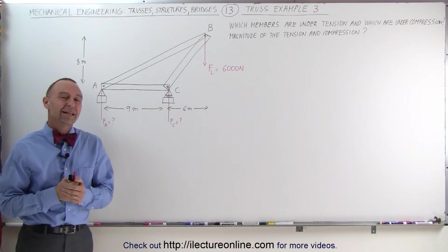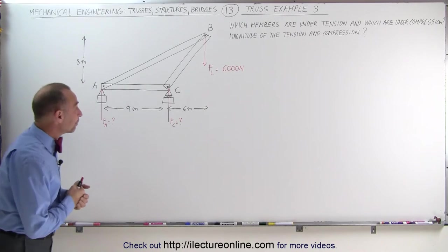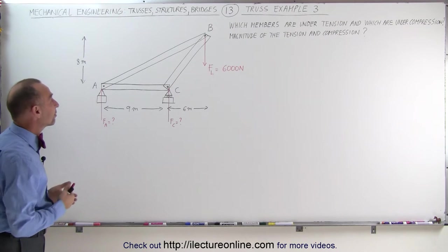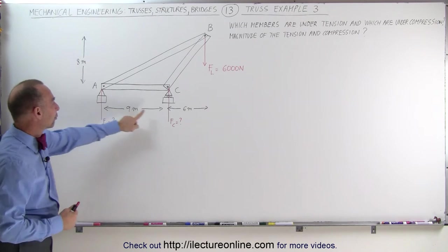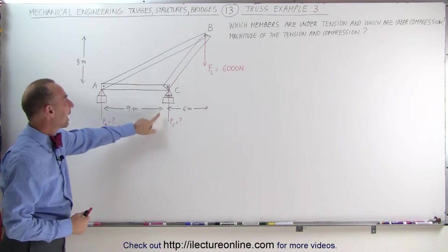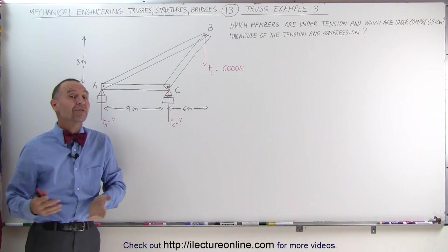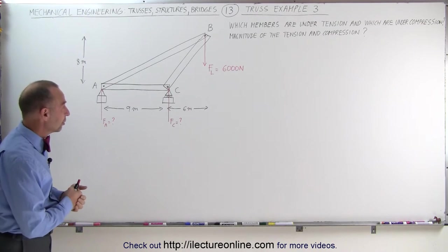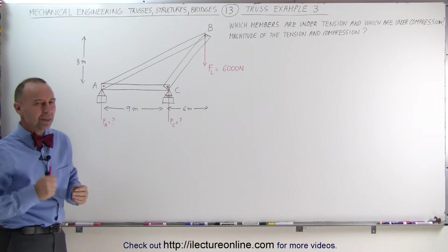Welcome to Electron Align. Let's take a look at this example. Here we have another simple truss example. We need to find the support forces and the forces on the members. We also need to find out which members are under compression and which members are under tension. Let's start with that.